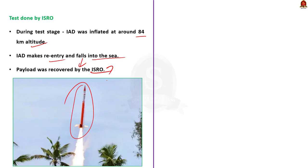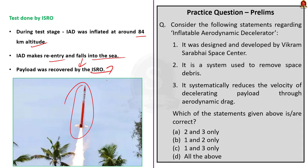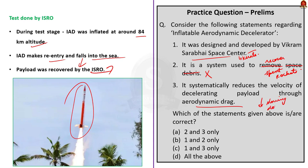Recently, ISRO tested this IAD. During the test, the IAD was inflated at around 84 km altitude, then made re-entry, fell into the sea, and was recovered by ISRO. Now the question: Statement 1 — 'IAD was designed and developed by Vikram Sarabhai Space Centre' — is correct. Statement 2 — 'IAD is a system used to remove space debris' — is wrong, because IAD is specifically designed to recover spent rockets, not space debris. Statement 3 — 'It systematically reduces the velocity of the payload through aerodynamic drag' — is correct. The question asks for correct statements, so the correct answer is Option C, 1 and 3 only.